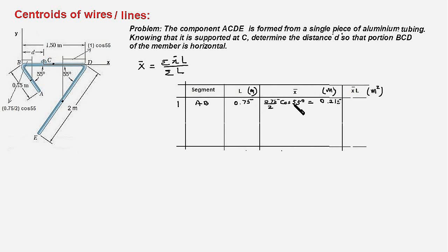Now let us take the second segment BD. The length of BD is 1.5 meters. The center point of section BD would be 1.5 upon 2, so this will be 0.750. And therefore X bar L would be equal to 1.125.